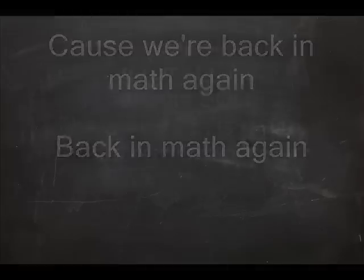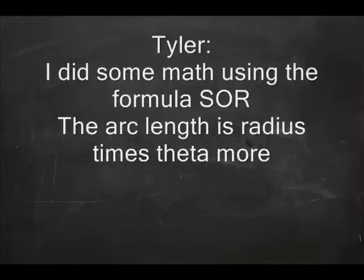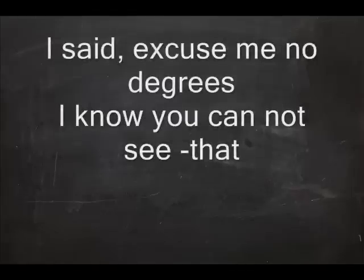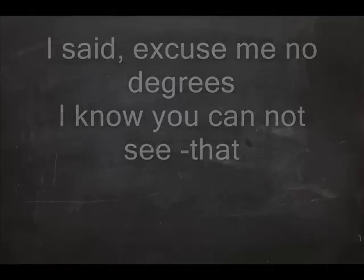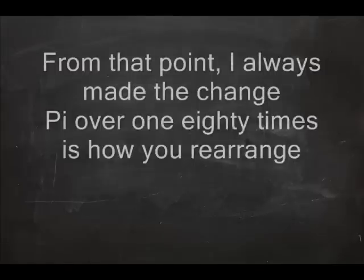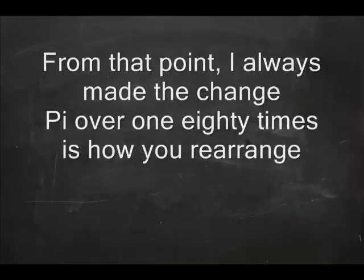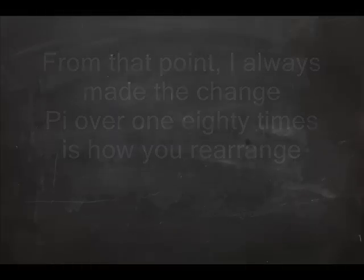Back in math again. I did some math using the formula s = rθ. The arc length is radius times theta more. I said, excuse me, no degrees. I know you cannot see that. You use radians, you can't go ask your friends. From that point, I always made the change — π over 180 times is how you rearrange.